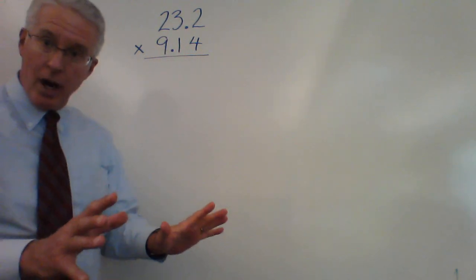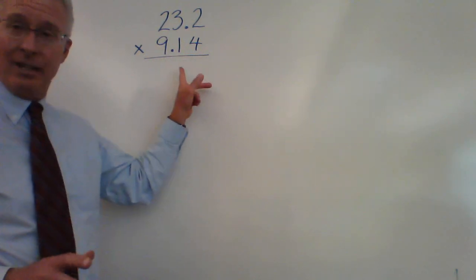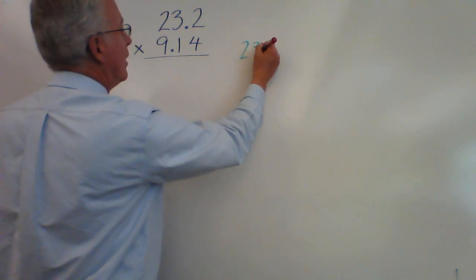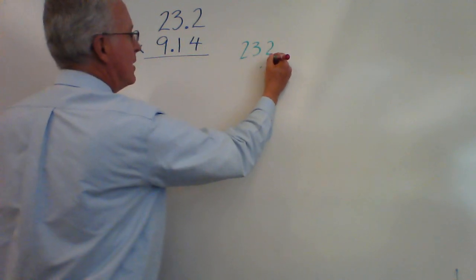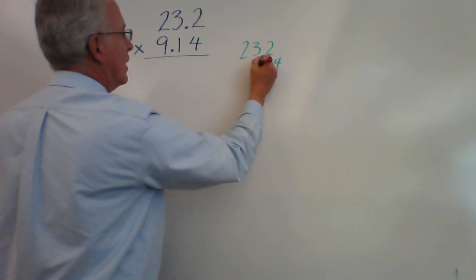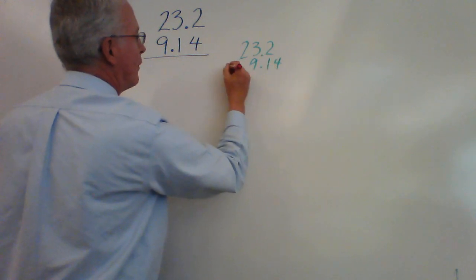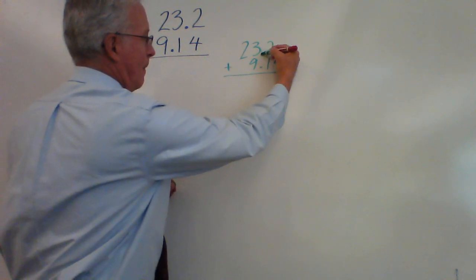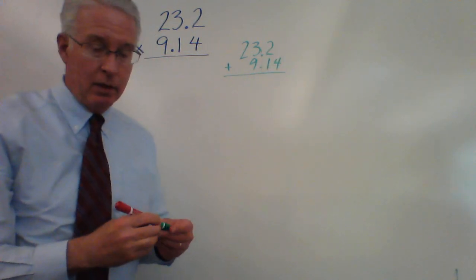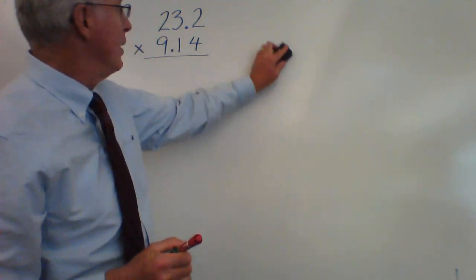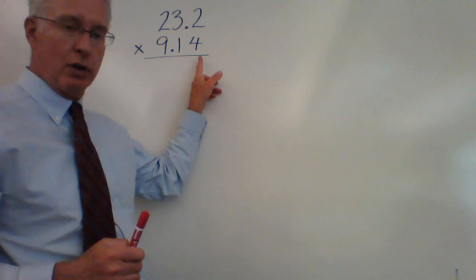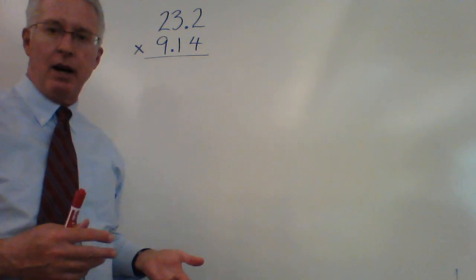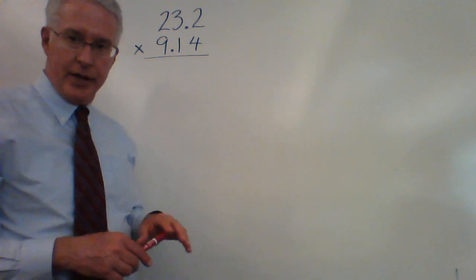That's how we set it up. Now, we know if we were trying to add these two numbers, we would have to make sure that the decimal points lined up if we were adding them, right? But we're not adding, we're multiplying. And when we multiply, all we have to do is make sure that the numbers line up for the first part of this algorithm, which are going to completely ignore the decimal points.